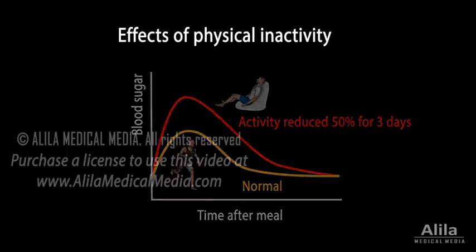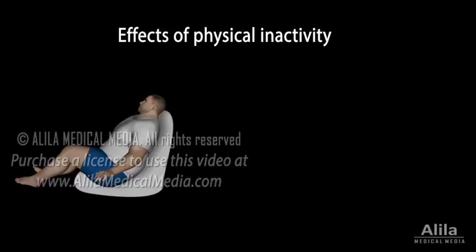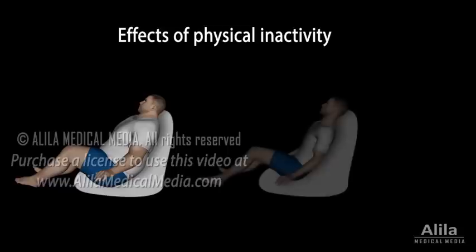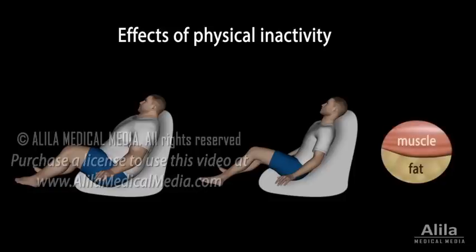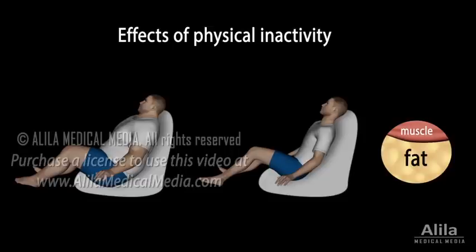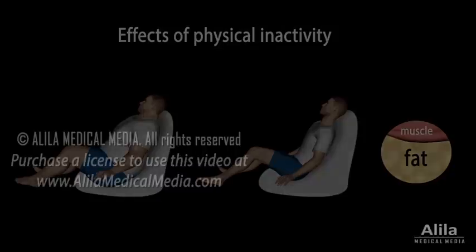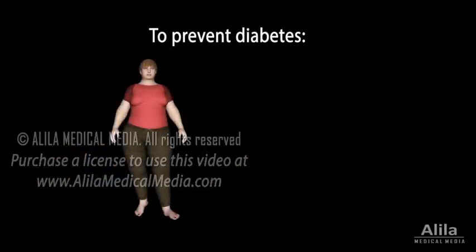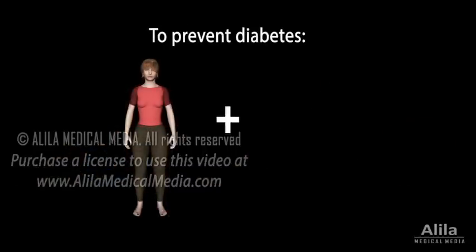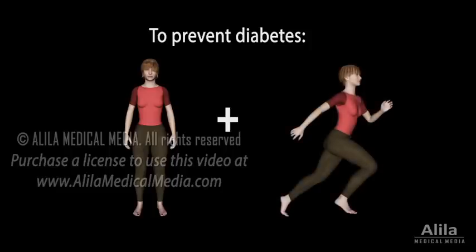More importantly, this happens not only to overweight patients, but also to people with seemingly healthy weight. This is probably because inactivity reduces muscle mass and replaces it with adipose tissue, thus having serious effects on blood sugar levels while still maintaining an overall normal weight. The bottom line is: in order to prevent diabetes, weight management must be combined with physical activity or exercise.